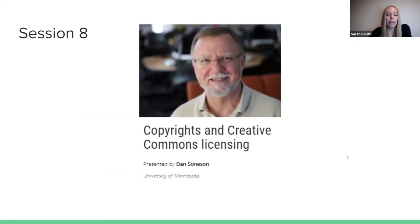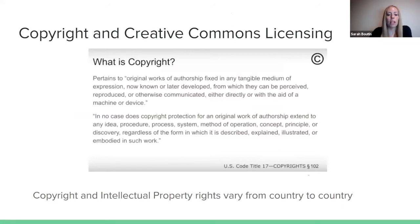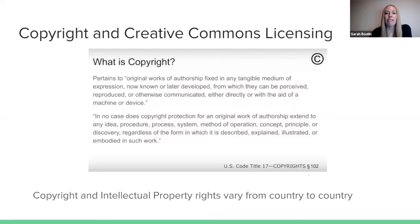In session eight, we had information on copyrights and Creative Commons licensing from Dan Sonnison. Copyright in the United States pertains to original works of authorship fixed in any tangible medium of expression, from which they can be perceived, reproduced, or otherwise communicated, either directly or with the aid of a machine or service. Copyright protection does not extend to any idea, procedure, process, system, method of operation, concept, principle, or discovery. After reading that definition, it's easy to feel confused — even legal experts often find copyright law somewhat confusing and cumbersome. Also, copyright and intellectual property rights vary greatly from country to country, so U.S. law may not apply elsewhere.